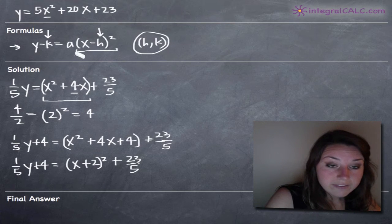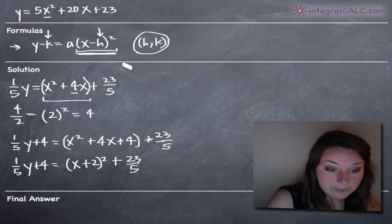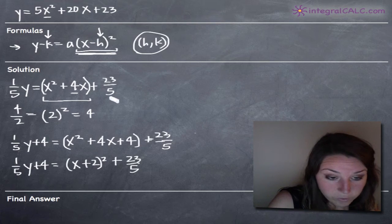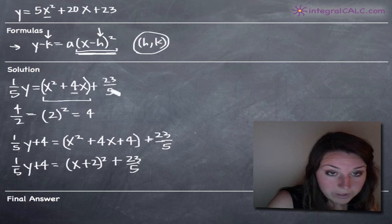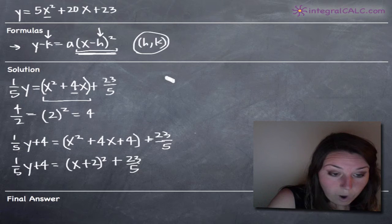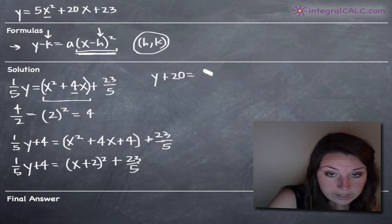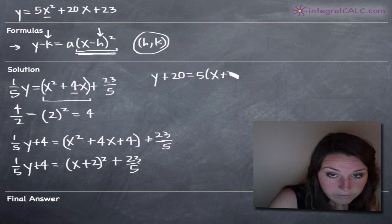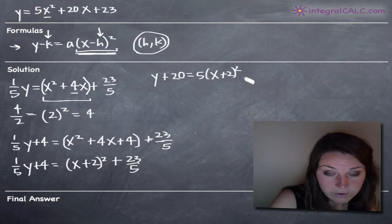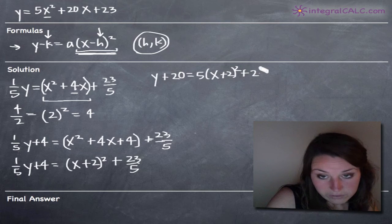But x plus 2 squared is now looking a lot like this part of our formula. To convert the rest of the formula, let's first multiply through by 5. So when we multiply through by 5, 1 fifth y times 5 will just give us y. 4 times 5 is 20. So we'll get y plus 20 equals, we've got to bring that 5 out in front there because we're multiplying every term by 5. So we've got 5 in front of our x plus 2 squared. And then 23 fifths times 5 will just give us 23.